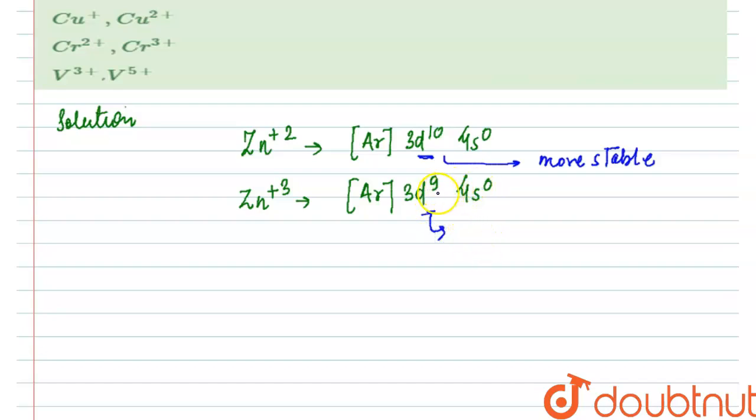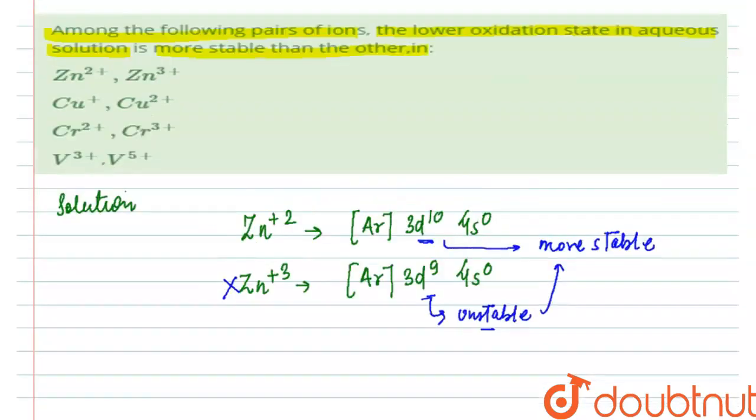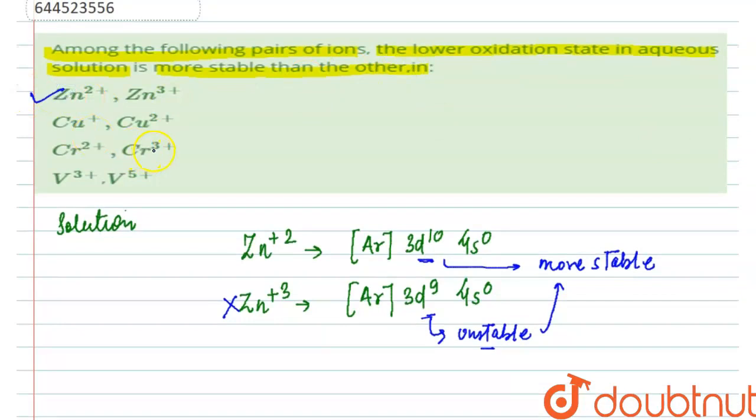The reason is that to eject one electron from a completely filled d orbital is really difficult and it will require a lot of energy. And also this will be unstable because it will always want to acquire the more stable configuration. So here Zn+3 is an unstable ion and Zn+2 is a stable ion. So according to our question, this could be our first correct option. Now let us check for the other three.